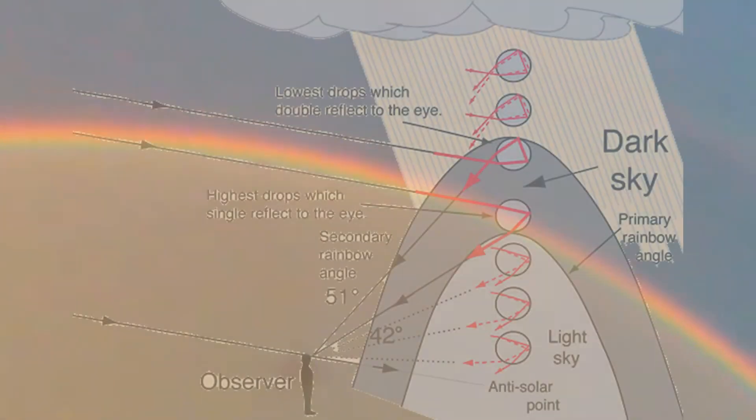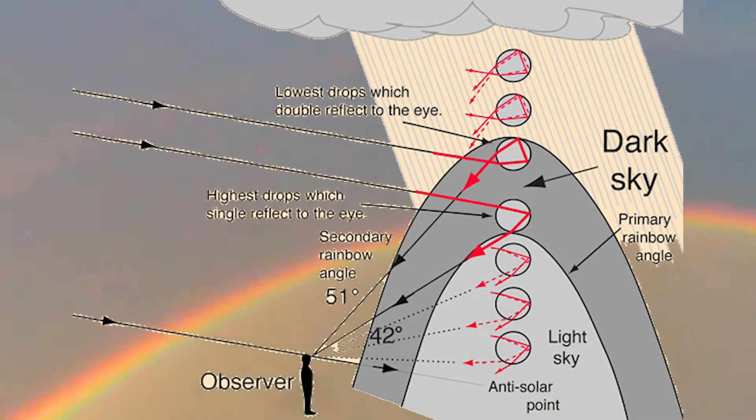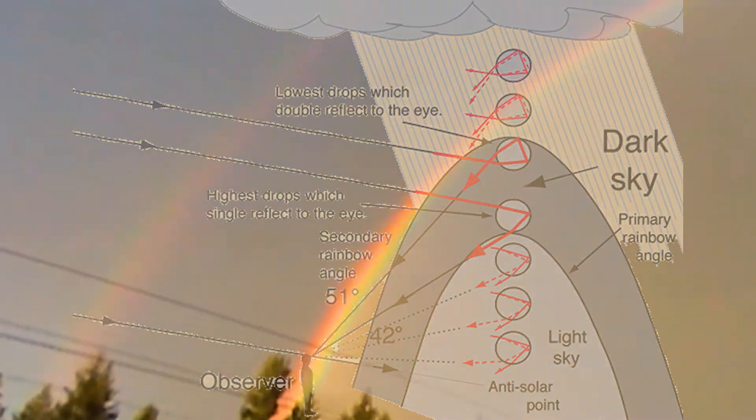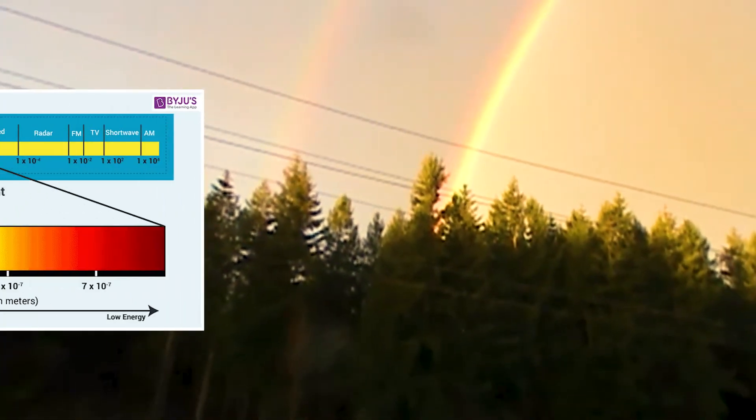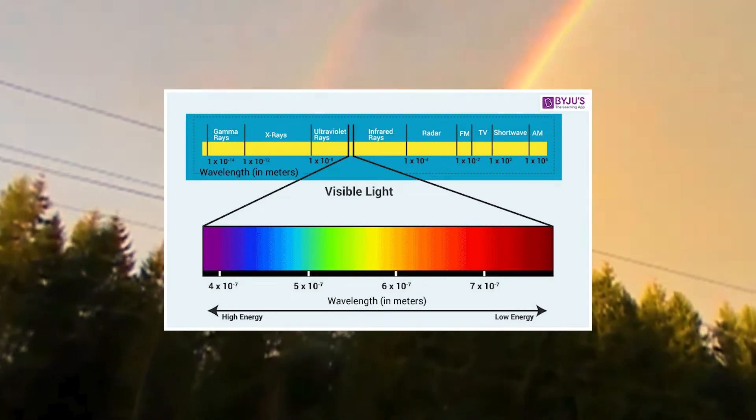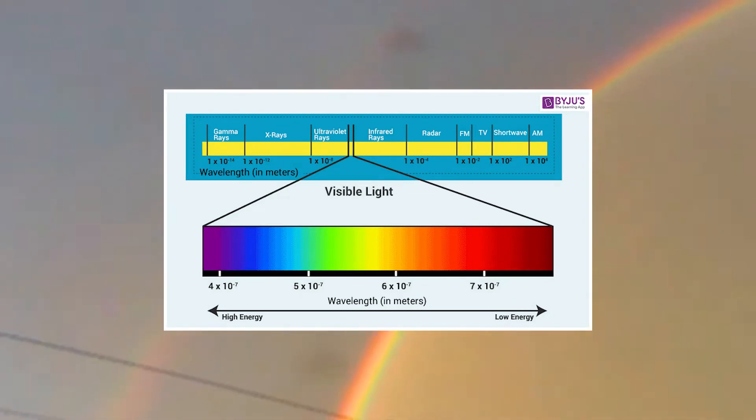The sky inside a primary rainbow is brighter than the sky outside the bowl. This is because each raindrop is a sphere and it scatters light over an entire circular disk in the sky. The radius of the disk depends on the wavelength of light, with red light being scattered over a larger angle than blue light. Over most of the disk, scattered light at all wavelengths overlaps, resulting in white light which brightens the sky.